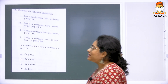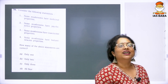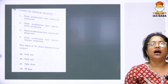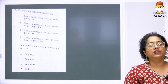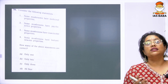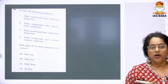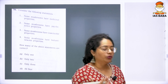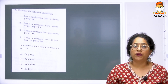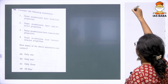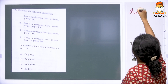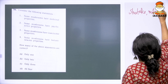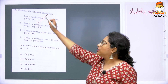Moving forward, the next question asks about mushrooms. Consider the following statements: some mushrooms have medicinal properties, some have psychoactive properties, some have insecticidal properties, and some have bioluminescent properties. Looking at medicinal mushrooms first, we have examples like shiitake mushrooms, maitake mushrooms, etc., that are considered medicinal. That statement is correct.